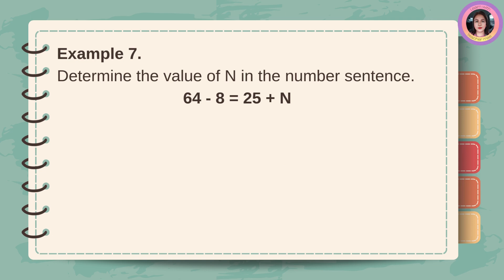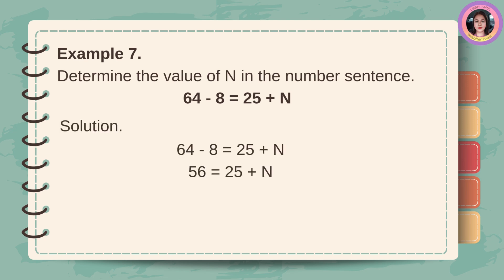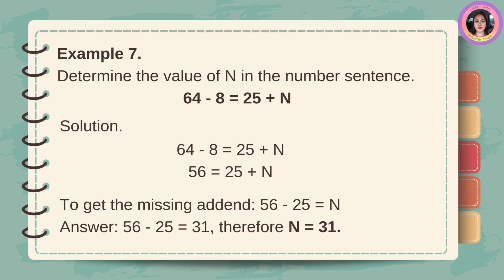Example number 7: Determine the value of n in the number sentence. 64 minus 8 is equal to 25 plus n. Solution: 64 minus 8 is equal to 56. 56 is equal to 25 plus n. To get the missing addend, 56 minus 25 is equal to n. Answer: 56 minus 25 is equal to 31. Therefore, n is equal to 31.